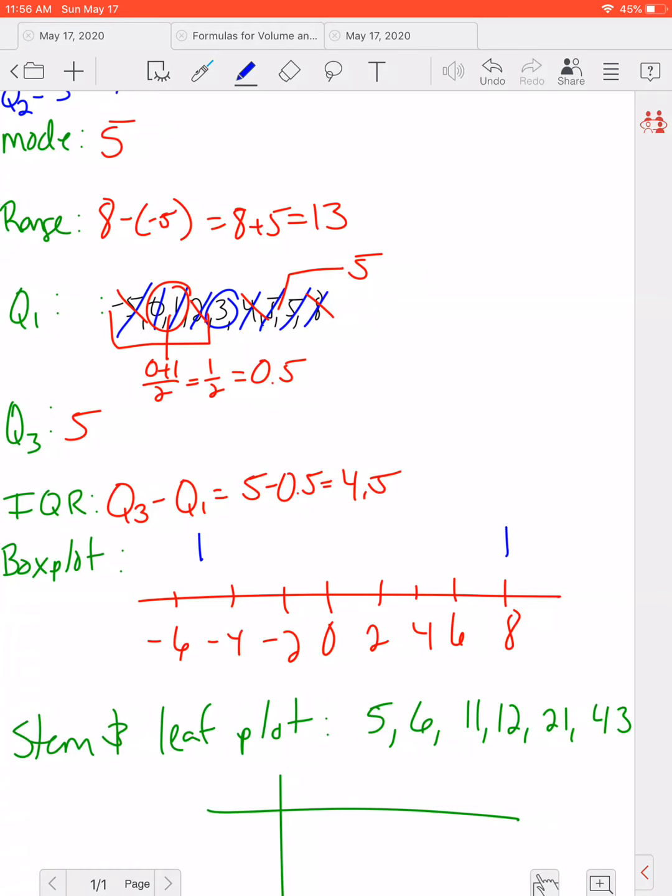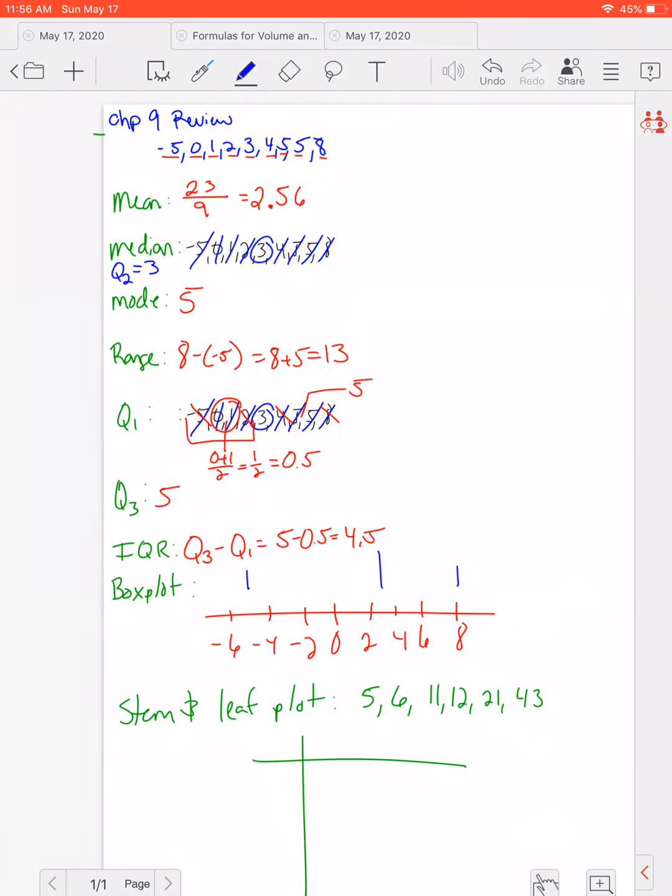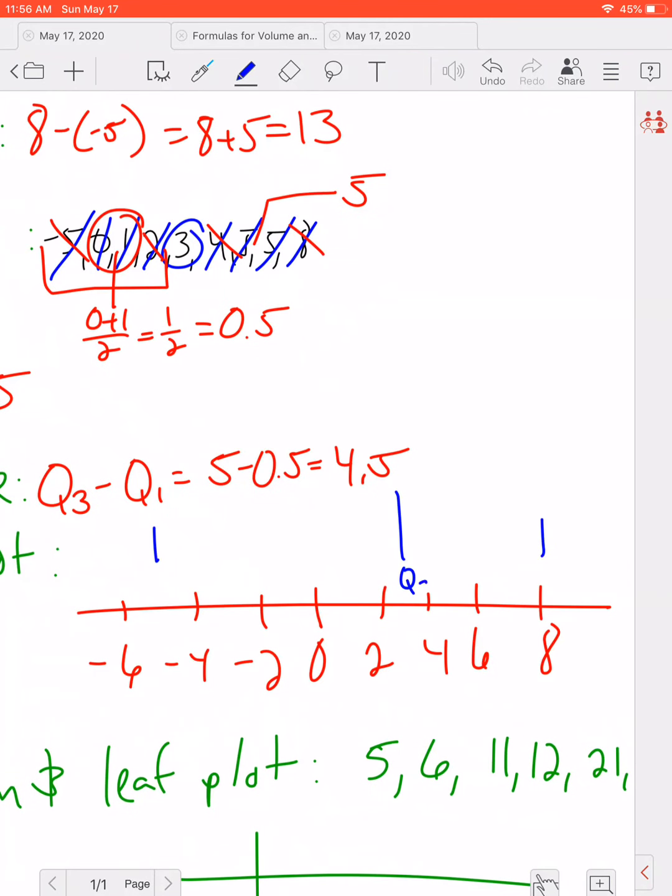My Q1 was 5, so we're going to make a big dash here. My quartile 2 was 3. I'm sorry, this is my Q3, I apologize. This is Q2. And Q1 was 1 half, which would be right here. And then we make a little box with the three big lines, and we make our little whiskers with the little lines.